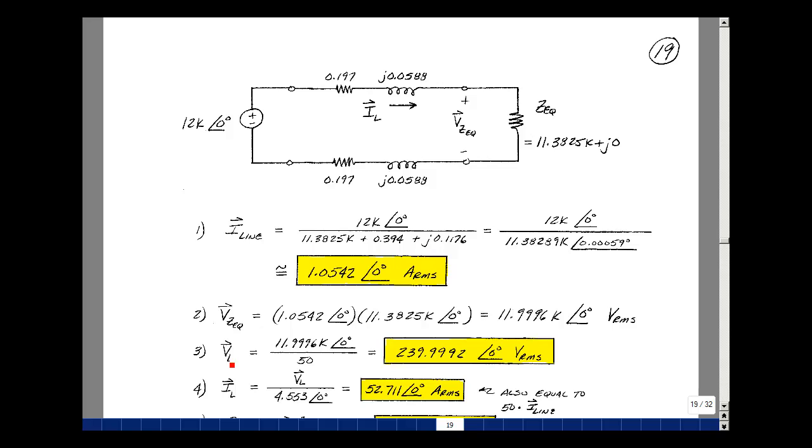Now the voltage across on the load on the other side of the transformer, on the secondary side, is going to be 1 50th as big. So it's going to step it down to 239.9992. In other words, our original 240 volts, most of it's actually getting to the load now.